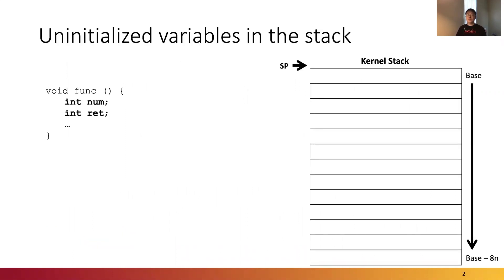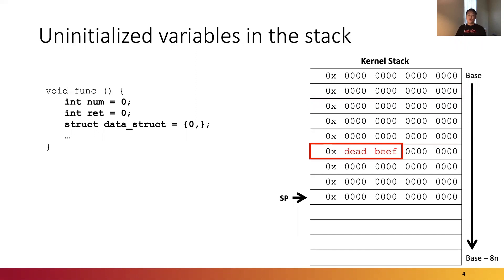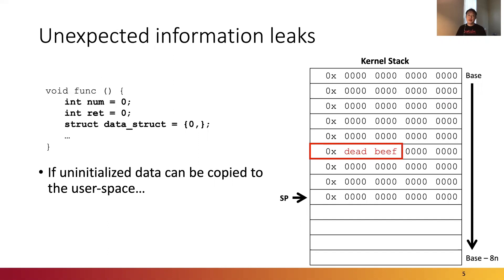Stack variables are called automatic variables because those are allocated and deallocated automatically when a program enters and leaves the scope of them. Uninitialized automatic variables have undefined values until they are assigned valid values. Even though we initialize the stack variables, the stack memory allocated for local variables can contain undefined values because of padding bytes inserted in a struct during compilation time. If such uninitialized data is copied to the user space, sensitive kernel information can be leaked.